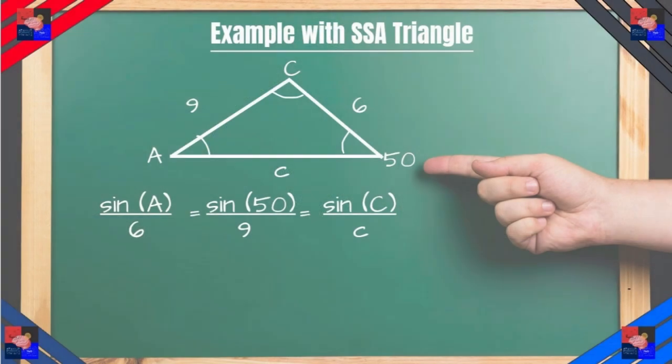But what if we know only one angle and two sides? Side side angle triangles. Let's take a look at this. Here we have A missing and we have angle B is the only one we know, 50 degrees.